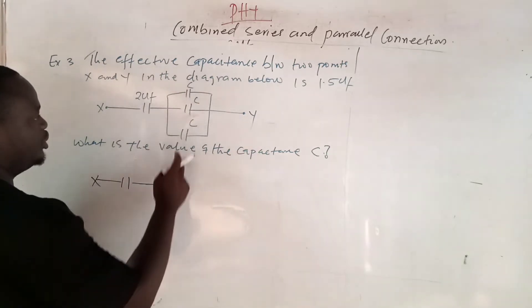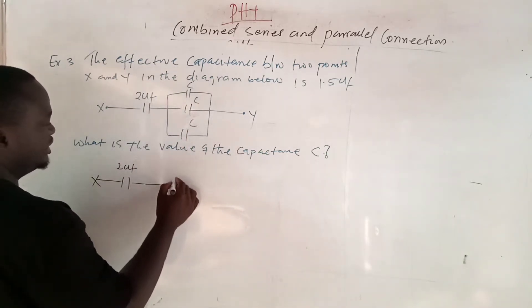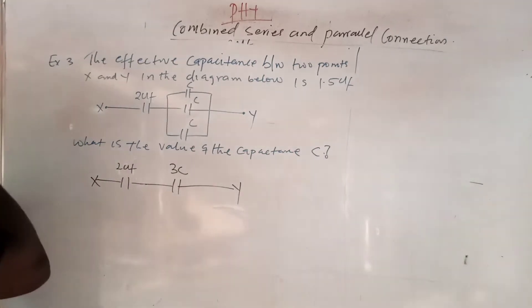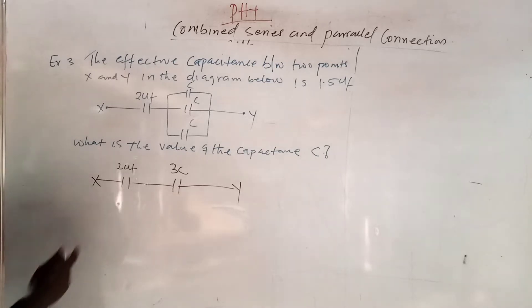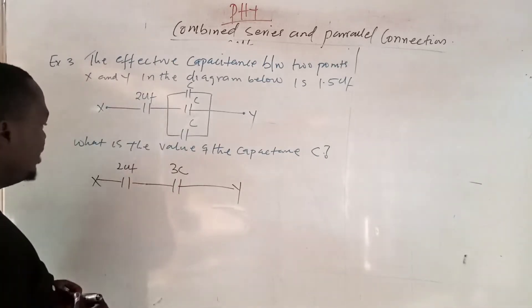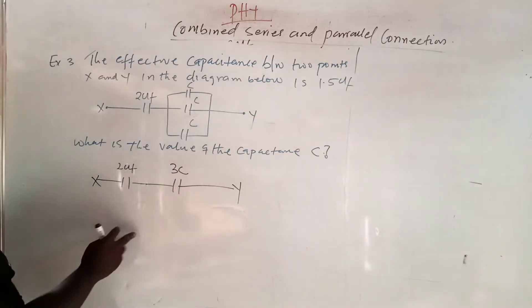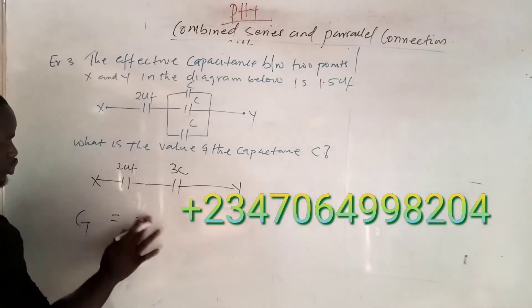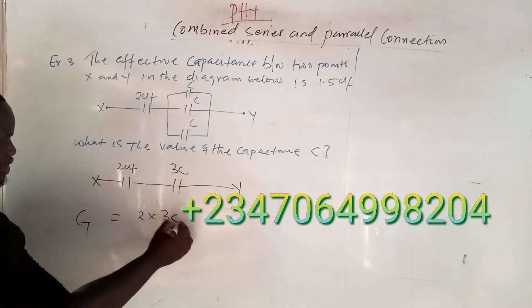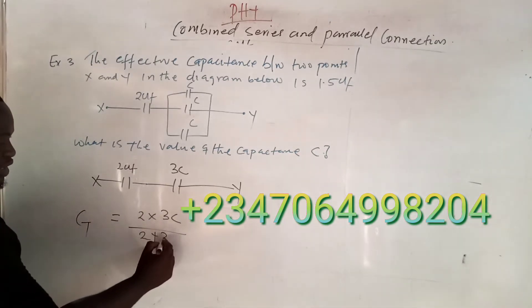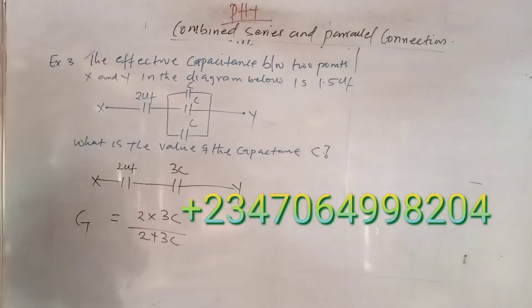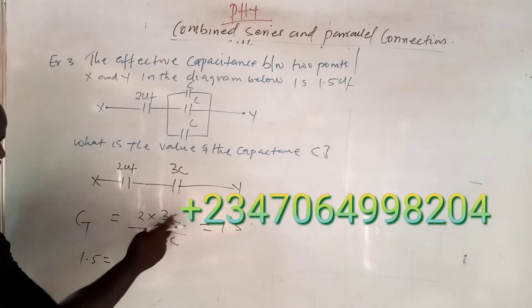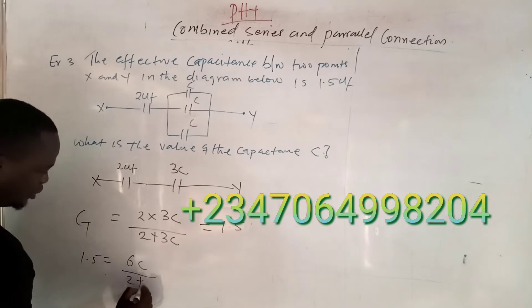This is X and this is Y. By redrawing, here is 2 microfarad and this place is 3C microfarad. Remember, from part 2 of the video, if you have 2 capacitors in series you can use product over sum: CT = (2 × 3C) / (2 + 3C). They already gave us CT = 1.5, so: 1.5 = 6C / (2 + 3C).